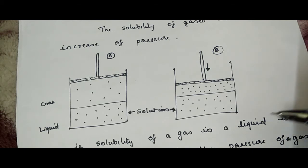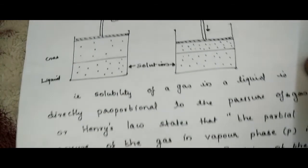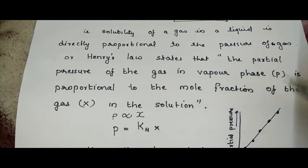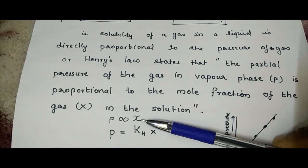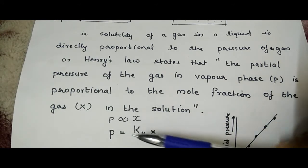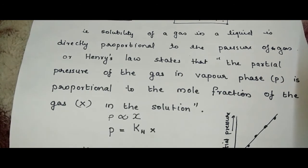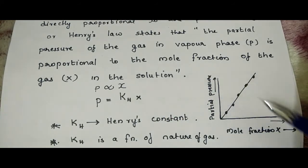Henry was the first to give a quantitative relationship between pressure and solubility. According to Henry's law, the solubility of a gas in a liquid is directly proportional to the pressure of the gas. In other words, the partial pressure of the gas in the vapor phase is proportional to the mole fraction of the gas in the solution — that is, partial pressure is directly proportional to mole fraction. By introducing the proportionality constant KH, we get p = KH × x, where KH is Henry's constant. We can plot a graph between partial pressure and mole fraction, and because they are directly proportional, we get a straight line.